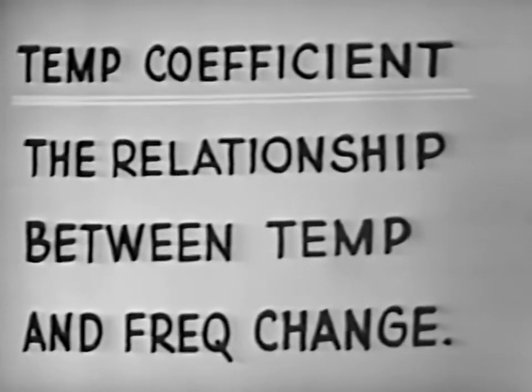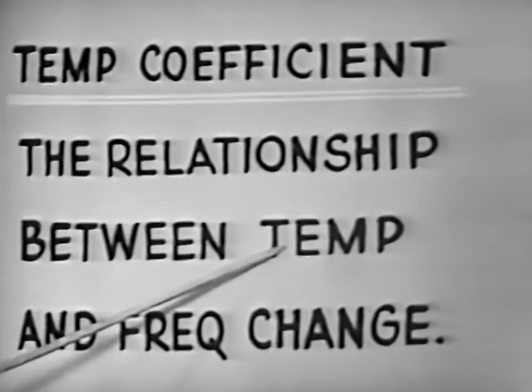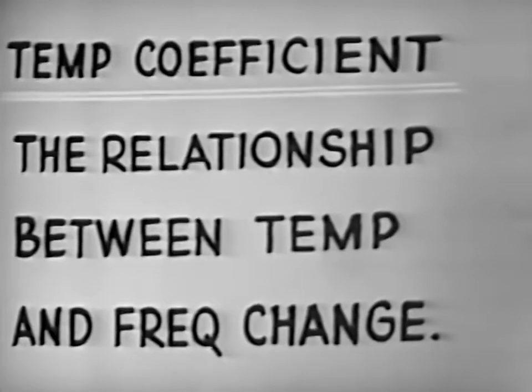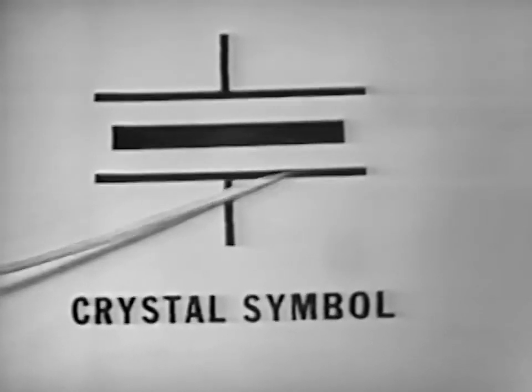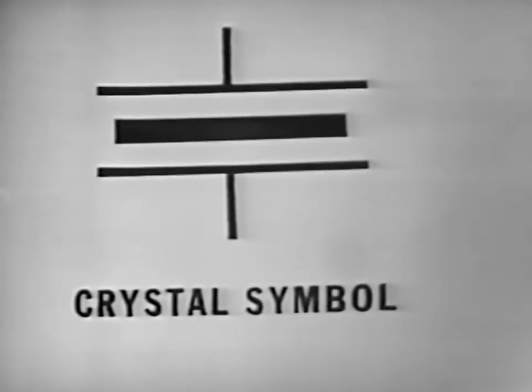Temperature coefficient was defined as the relationship between a temperature change and a frequency change. We also covered the schematic symbol for a crystal — the outer plates represent the crystal holder, the inner area the crystal itself. In conclusion, the one big advantage of the crystal is its frequency stability. It has a very high Q, giving a very narrow bandwidth. The main asset of a crystal oscillator is its frequency stability. That concludes the lesson on the characteristics of crystals.